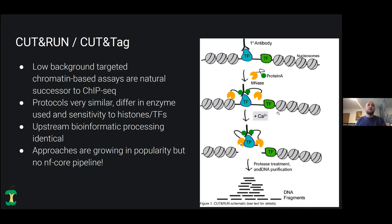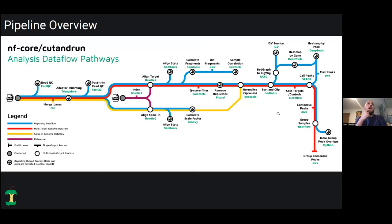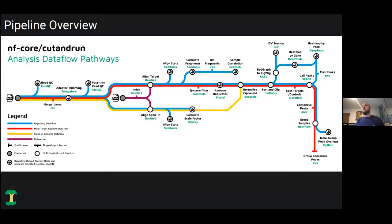These approaches are really growing in popularity, especially at the Crick but globally as well, and there was no nf-core pipeline for this. Here's an overview of the pipeline using the tube-map diagram. In general, we have trimming and QC at the beginning, alignment in the middle, then we gather reads into peaks, remove duplicates, filter, and finally call peaks, with reporting produced all the way along.